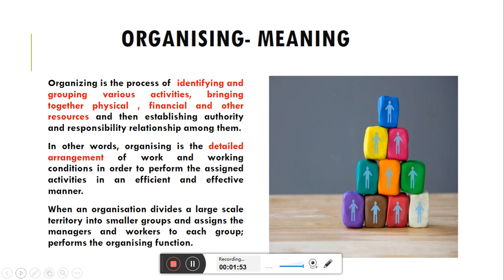उन activities को perform करने के लिए कौन से physical resources होने चाहिए, कितना पैसा चाहिए, कितने human resources होने चाहिए, क्या machinery equipment होने चाहिए — उन सारी चीजों का arrangement करता है। और organizing में जो manager है वो detailed arrangement करता है so that जो काम है वो smoothly और efficient and effective manner के साथ perform किया जाए।